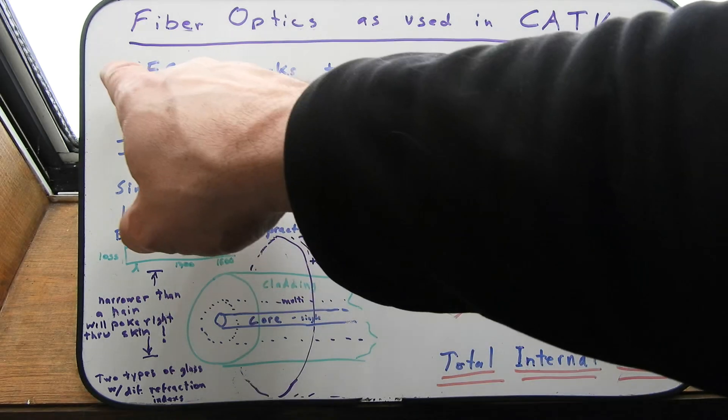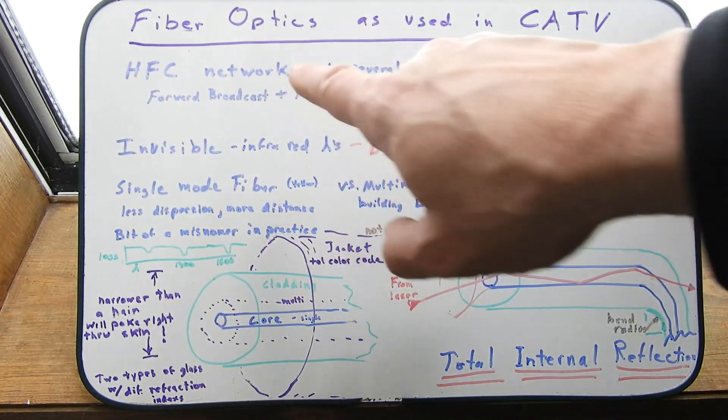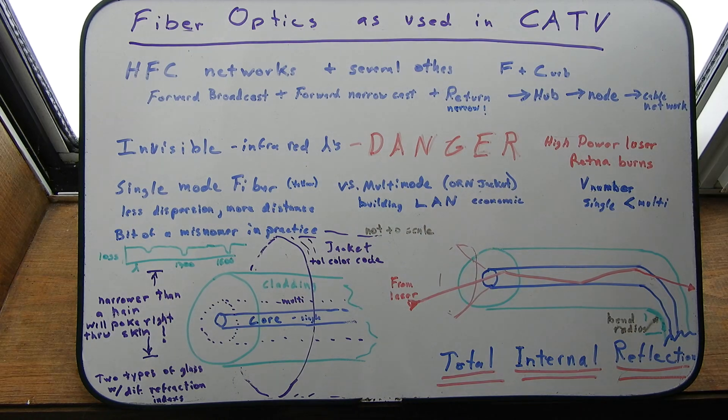They call them an HFC network, hybrid fiber coax network. That's because we're building on top of the old coax network that we've had for decades. Cable companies are cheap. Everything's got to be done economically.